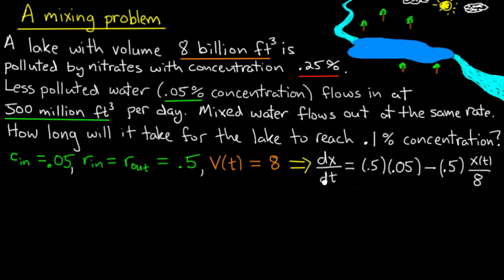Fitting all this into the model for a mixing problem, we get dx/dt is equal to rate in times concentration in minus rate out times concentration out. And as I described when I derived the model, the concentration out is the total amount divided by the volume of the container, in this case 8 billion cubic feet.